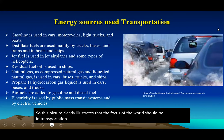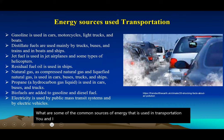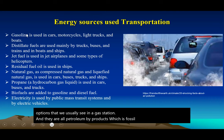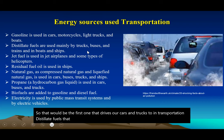What are some of the common sources of energy used in transportation? Gasoline and diesel are the two options we usually see at a gas station — both are petroleum byproducts, which are fossil fuels. Distillate fuels, also from fossil fuels, are used in very large vehicles, boats, ships, and trains. Jet fuel is used in aircraft and helicopters, and residual fuel is used in ships.